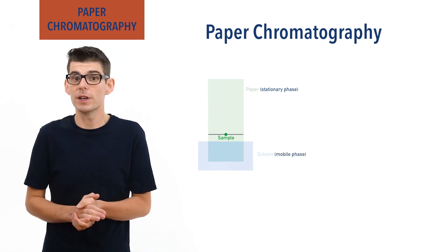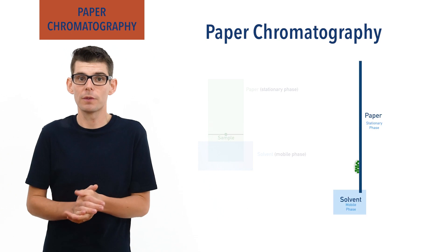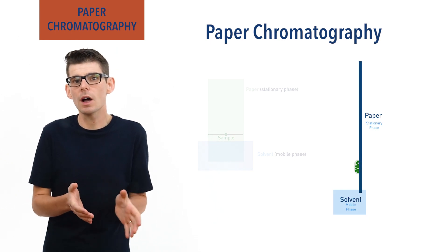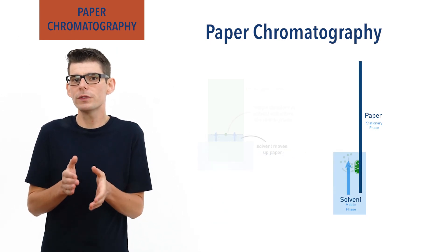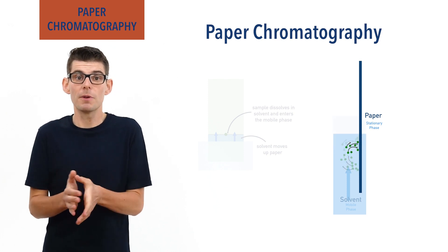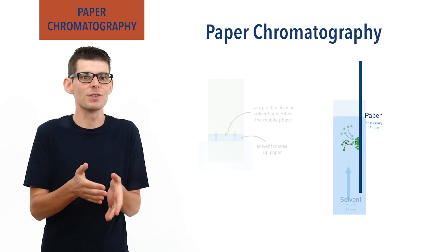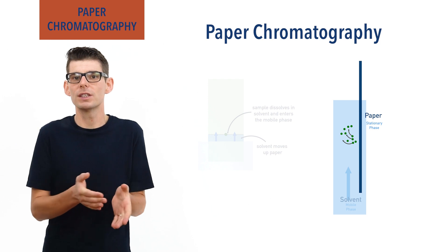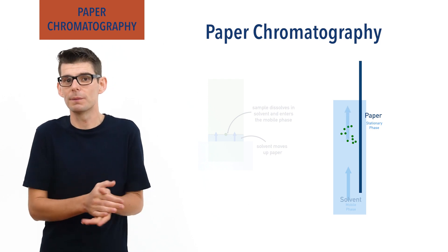The paper is placed vertically into a small volume of the mobile phase, and as the solvent moves up the paper, the dissolved substances in it will absorb onto the paper before dissolving from the paper and re-dissolving in the solvent, re-entering the mobile phase and travelling up the paper.